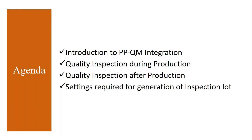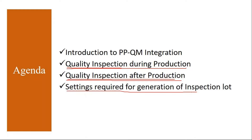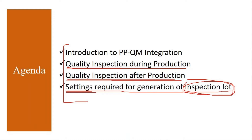We will see the integration between PP and QM — at what places the integration happens, an overview. Then quality inspection during production: when the production activity is ongoing, how the quality inspection is performed. Then quality inspection after production: once production is completed, how to do quality inspection on the produced product. Then settings required for generation of an inspection lot — how to generate it and what settings we need to do in the system.